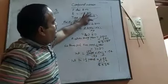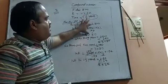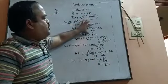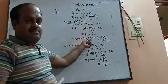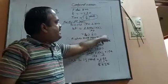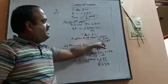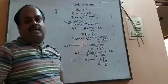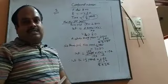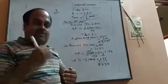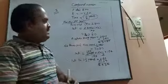Now we will add this principal and interest to get the amount at the end of the first year: 2800 plus 280 rupees, which comes as 3080 rupees. As I said in the last class, the amount at the end of the year becomes the principal for the next year.